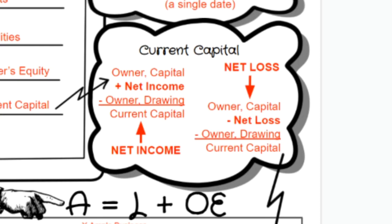Think of it this way: you add anything where the business would be smiling, and subtract anything where it would be frowning. Owner capital is positive, net income makes the business smile so you add it, and owner drawing makes the business frown so you subtract it. For net loss, the business frowns, so you subtract both net loss and owner drawing: owner capital minus net loss minus owner drawing equals current capital.